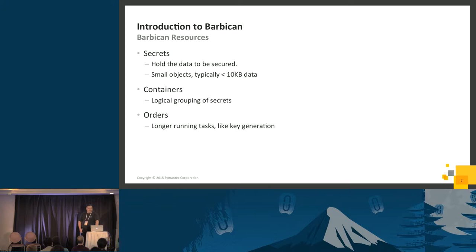The last resource type is orders. These are longer-running tasks, like when you ask Barbican to generate a key for you. Asymmetric keys can take a long time if your system doesn't have a lot of entropy. You don't want a client hanging around waiting — it could potentially take minutes. So you submit an order, tell Barbican what you want, and then poll Barbican to find out when it's done and get the result back.